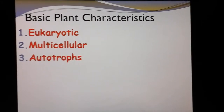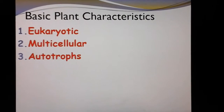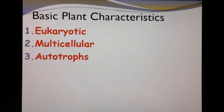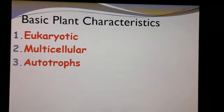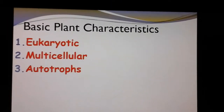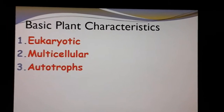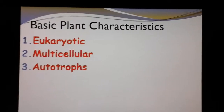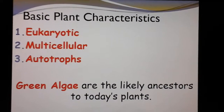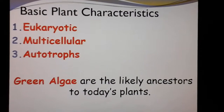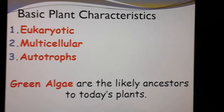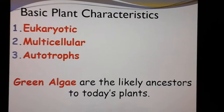A lot of algae is actually unicellular, which is why it cannot be in the plant group. If you're a plant, you're an autotroph — autotrophs mean that you make your own food. Plants do photosynthesis. They have chloroplasts. They're green because of the chlorophyll inside of them. As far as evolution is concerned, we probably got plants from green algae.